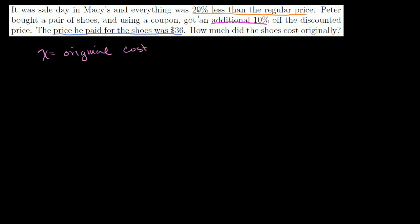So let's just use x is equal to original cost. So there was just a regular sale on that day. Everything was 20% less than the regular price. So using that information, on that day if you wanted to buy the shoes, the cost of the shoes would be x minus 0.20x,